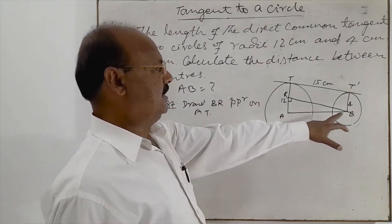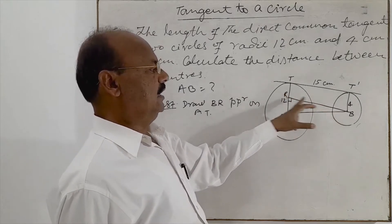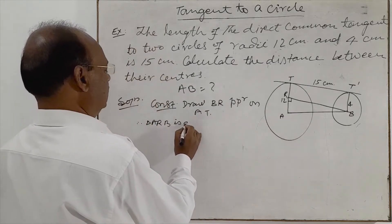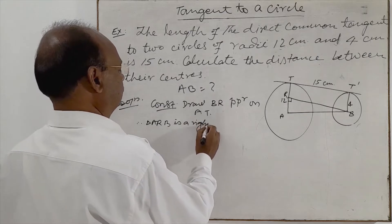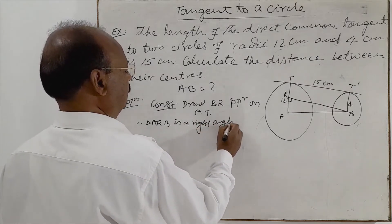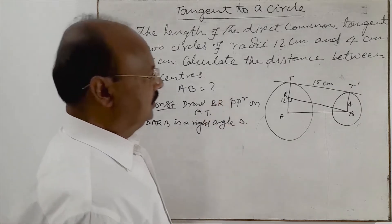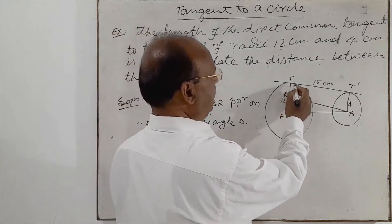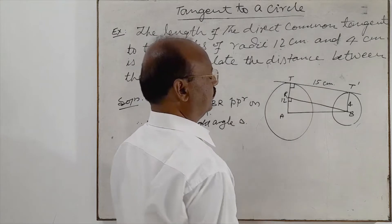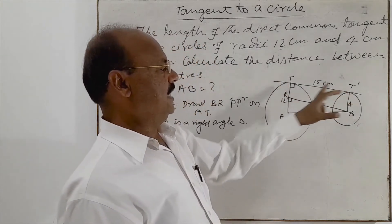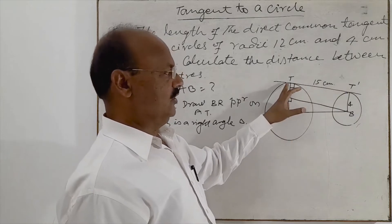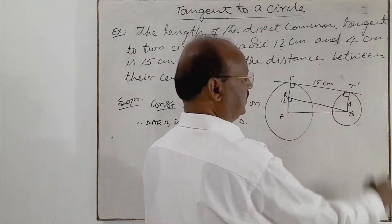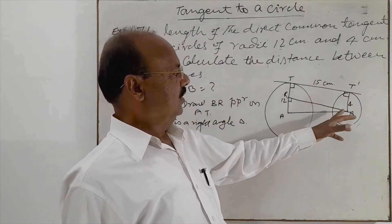In this way we are getting a right angle triangle ARB. Therefore triangle ARB is a right angle triangle. From this figure it is very clear that AT is perpendicular to AT' because the tangent is always perpendicular to the radius at the point of contact. Similarly, BT' is also 90 degrees for the same reason.